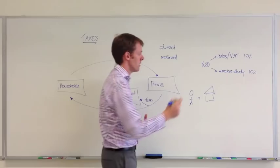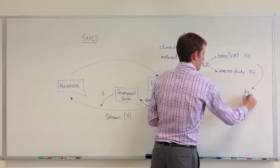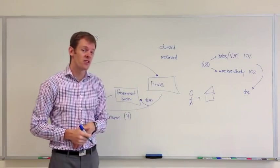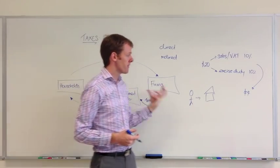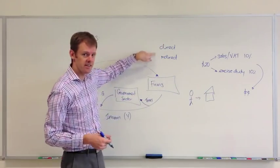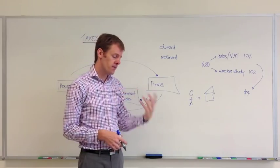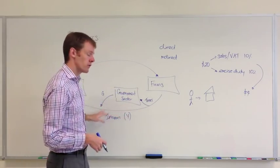These taxes together, in this case it makes up about $4 of the price of the product. That's paid by the firm to the government. So the government collects two types of taxes, direct taxes and indirect taxes, and it uses that money to provide public goods to the economy.